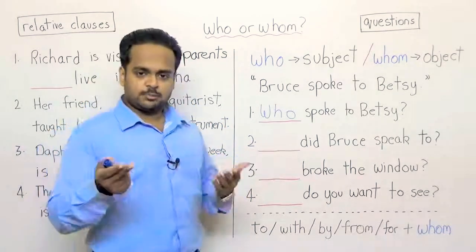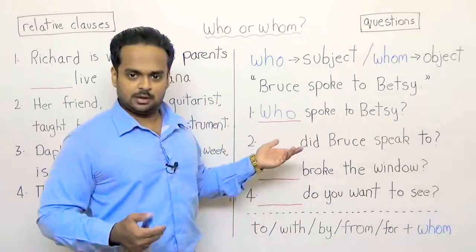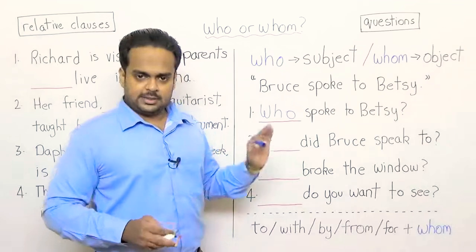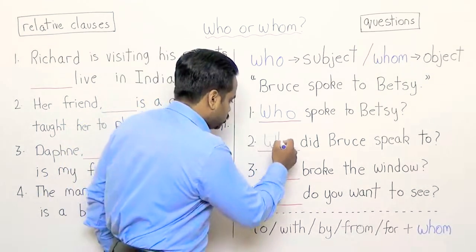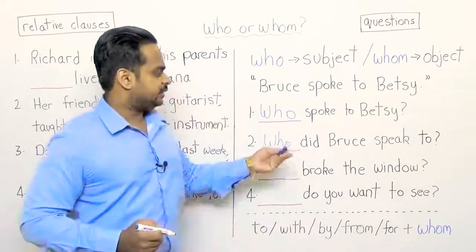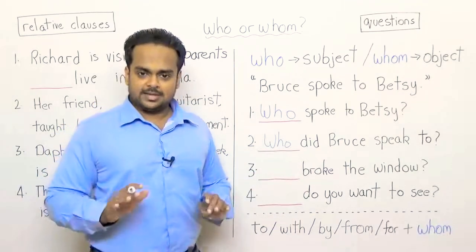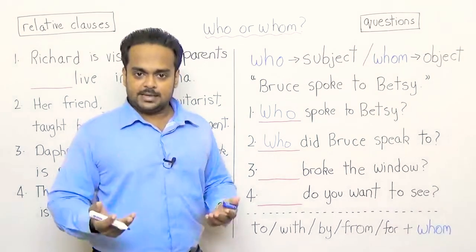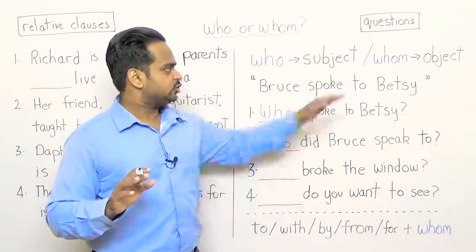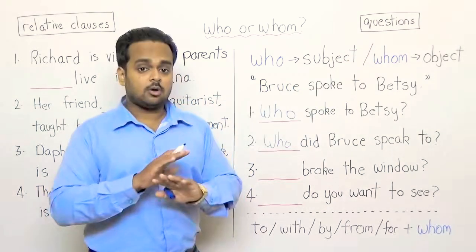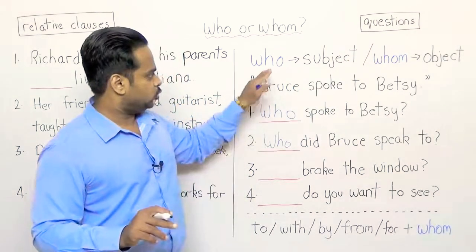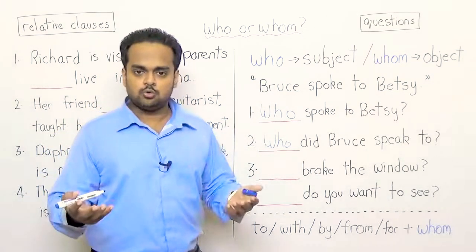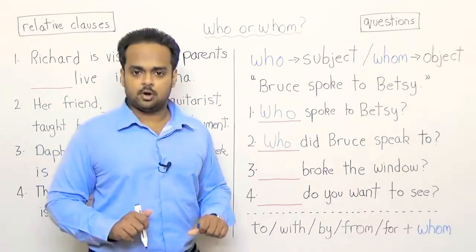Now in the second sentence you probably guessed we have to use whom, and that is correct. But I'm just going to write who over here first. Who did Bruce speak to? This is actually correct in speaking — in fact when we speak we don't commonly use whom. In speech we almost always use who. So this means if you are not sure whether to use who or whom, just use who and you will be okay.